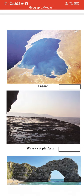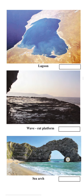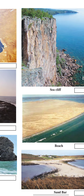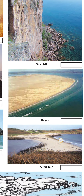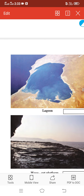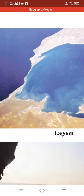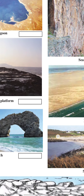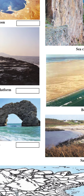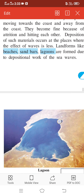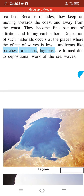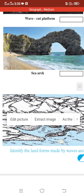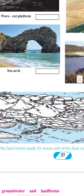We also have a wave-cut platform, sea arches, and beaches. Sandbars are like a wall — a wall is created, and that wall is called a sandbar. These sandbars divide the ocean and the lagoon.